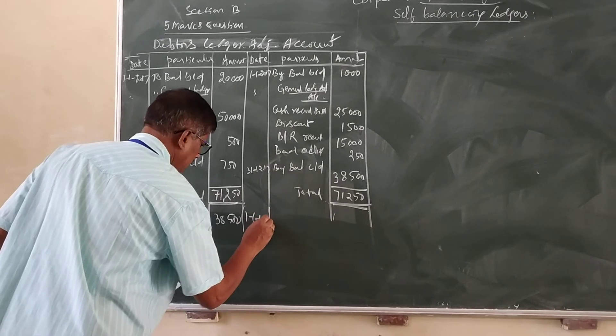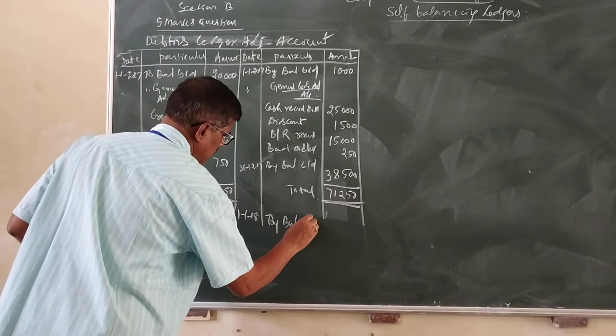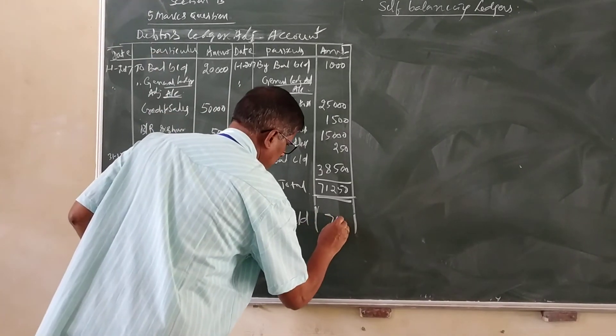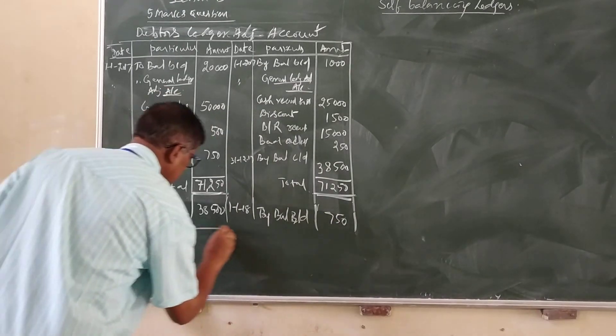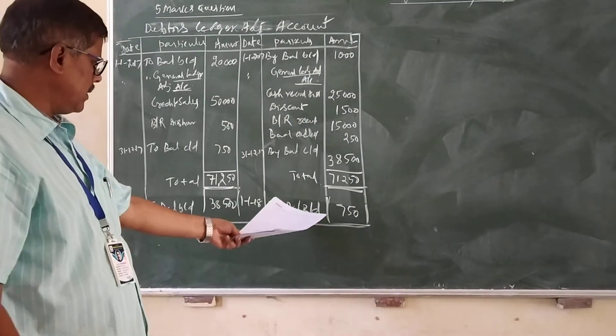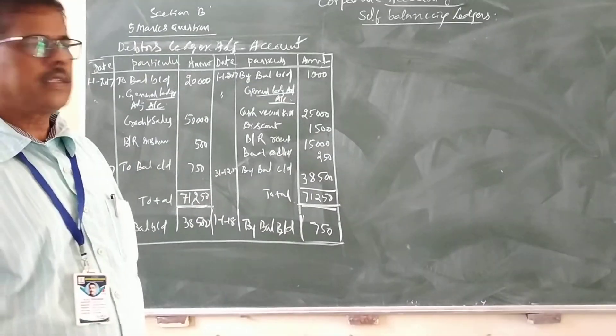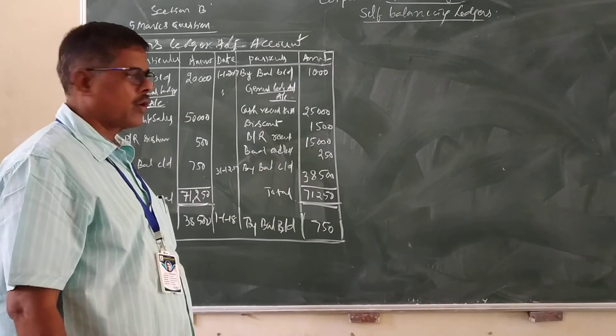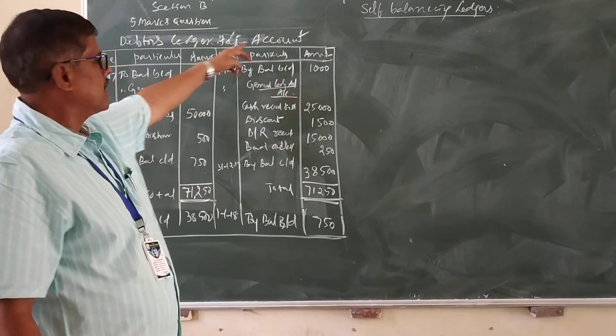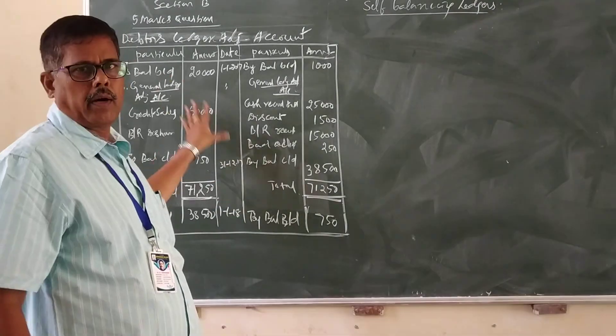1-1-18, by balance b/d 750. This is for 5 marks. The credit balance of debit side is 750. This is the procedure or method to prepare ledger adjustment account in the general ledger. This is for 5 marks.